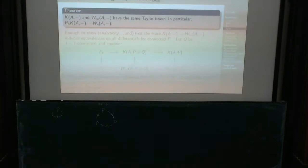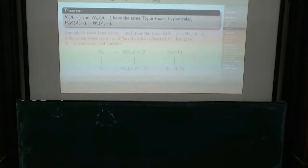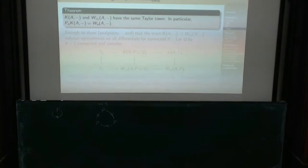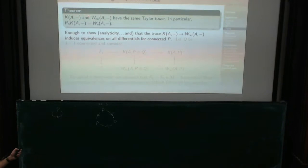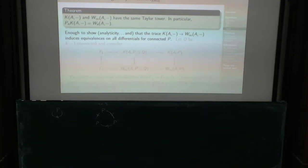What we should then do is show that K-theory of A with coefficients in something and this W thing with coefficients in something have the same Taylor Tower. Because then I have that the N-th P_N of K is actually just W_N. If you know that both are analytic and you have a map between them — which is just the trace — then two analytic functions are the same if they have the same differentials in some arbitrarily small neighborhood. And that's just what we're going to use.